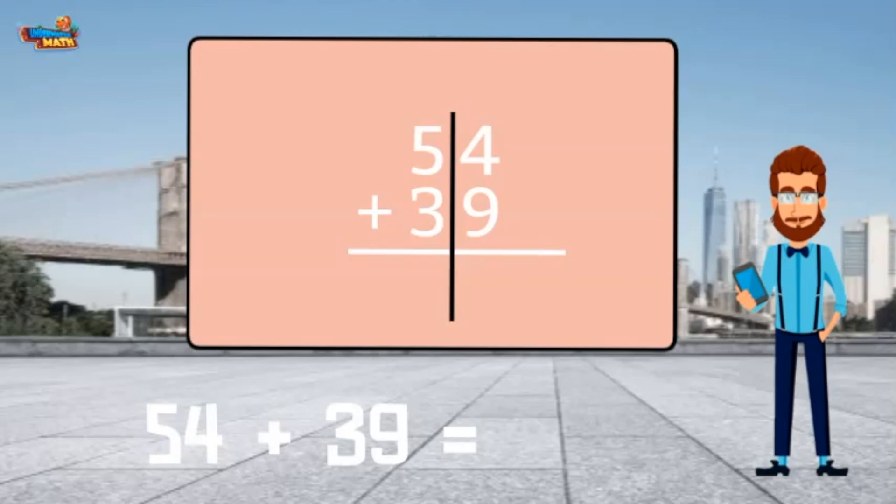Remember when the sum of two numbers is larger than 9, the 1's place goes under the line, and the 10's place carries over to the next place value.